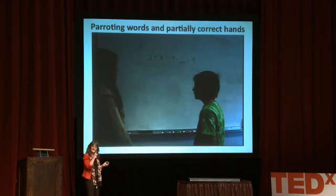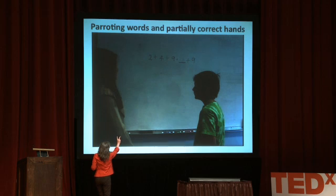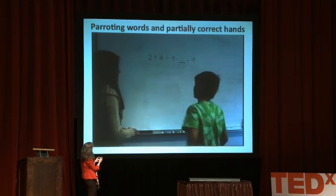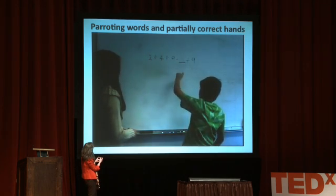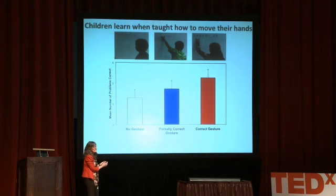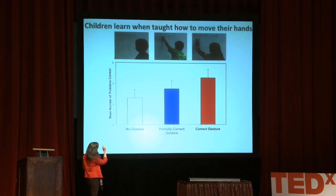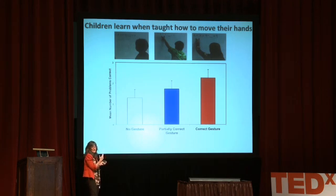And a third group said the same words and the same grouping gesture, but under the wrong numbers. What happens? The children who produced the fully correct grouping strategy did best, followed by the kids who produced this partially correct strategy in gesture, followed by children who produced no gestures at all. So if we know what to tell children to do with their hands, we can help them learn better by having them move their hands in particular ways.